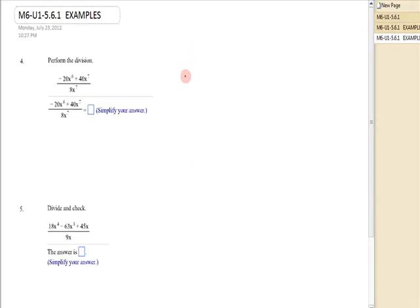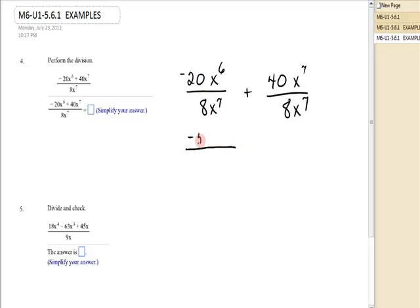Let's look at number 4. I have negative 20x to the 6th over 8x to the 7th plus 40x to the 7th over 8x to the 7th. Well, now the first one. There's a couple of different ways I can handle it. Obviously, 8 does not go into negative 20 evenly. It does reduce. 4 is a common factor. 4 goes in there negative 5 times. 4 goes in there 2 times.